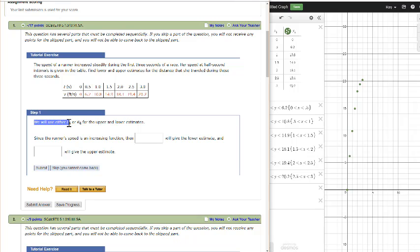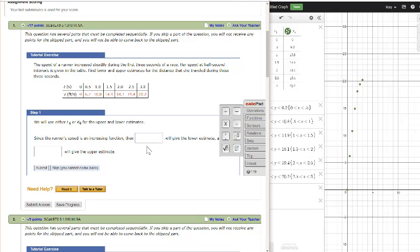So they want us to use either L6 or R6. So L is the left-hand endpoint approximations and R is the right-hand endpoint approximations for lower and upper estimates. We can see that the runner's speed is increasing steadily: 0, 6, 10, 14, 18, etc. Then one of these expressions, the L6 or R6, will be the lower estimate, and the other expression will give us the upper estimate.